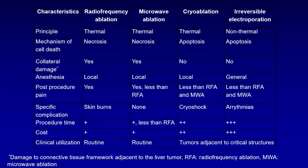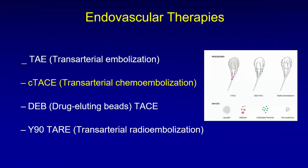In cryoablation and IRE, apoptosis is the mechanism of cell death. IRE is non-thermal and has to be done under general anesthesia; it can cause arrhythmias because of the high voltage delivered. Among endovascular therapies, there is a range of options, but the one used primarily for recurrent HCC is conventional transarterial chemoembolization.